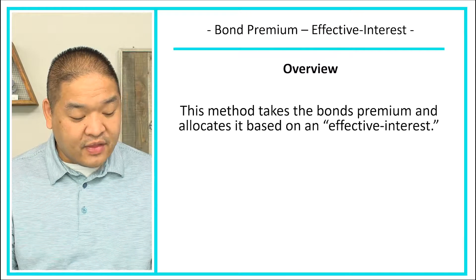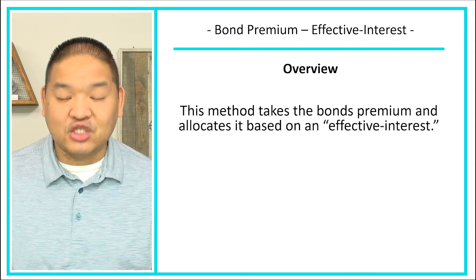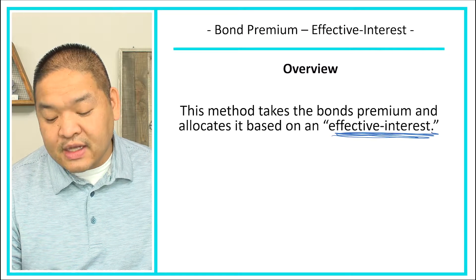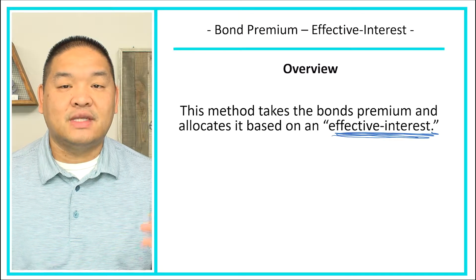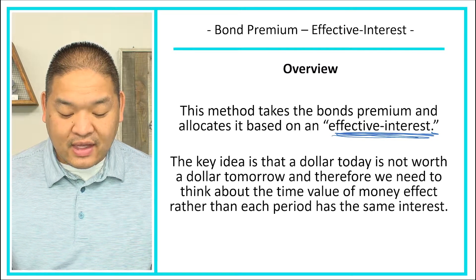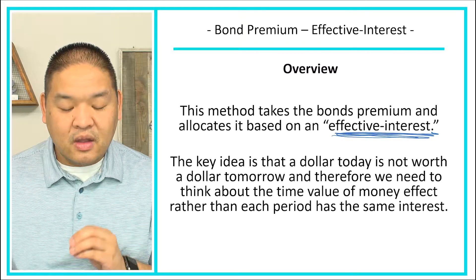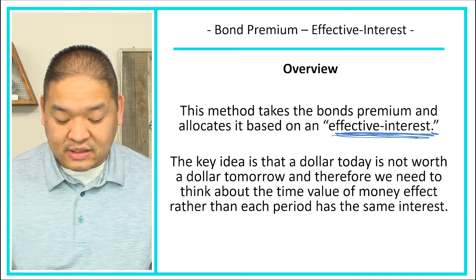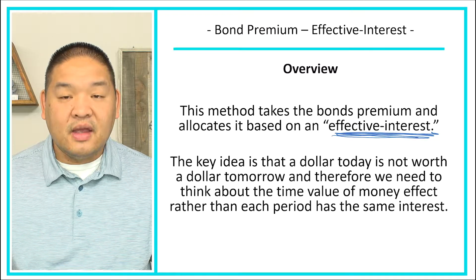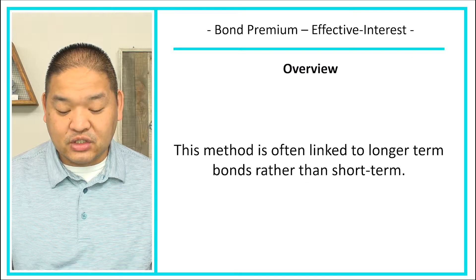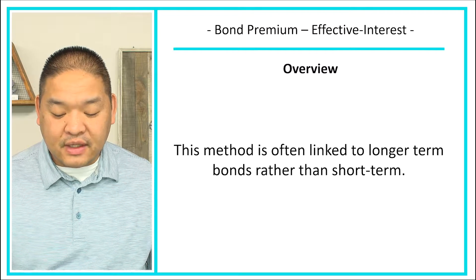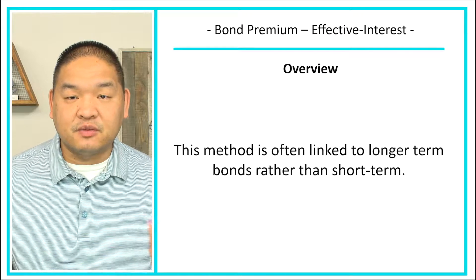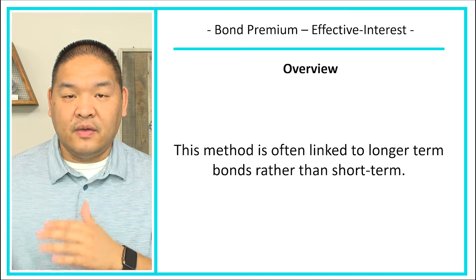So an overview: this method takes the bond premium and allocates it based on an effective interest rate to calculate the interest expense. The key idea is that a dollar today is not the same as a dollar tomorrow, and therefore we need to think about the time value of money effect rather than each period having the same interest. This method is often linked to longer-term bonds because of the difference in the time value of money.